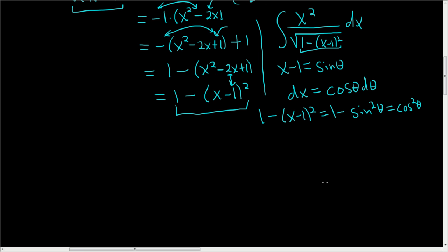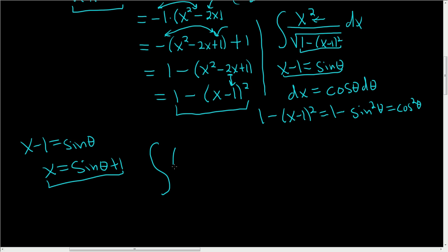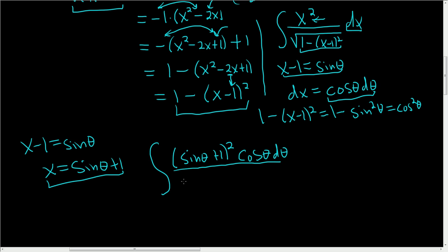Now let's do the substitution carefully. We need to figure out what x is. Since x minus 1 equals sine theta, x equals sine theta plus 1. So we get the integral of (sine theta plus 1) squared — that takes care of the x. The dx is cosine theta d theta. And the square root term, which we worked out, equals the square root of cosine squared theta, which is cosine theta.